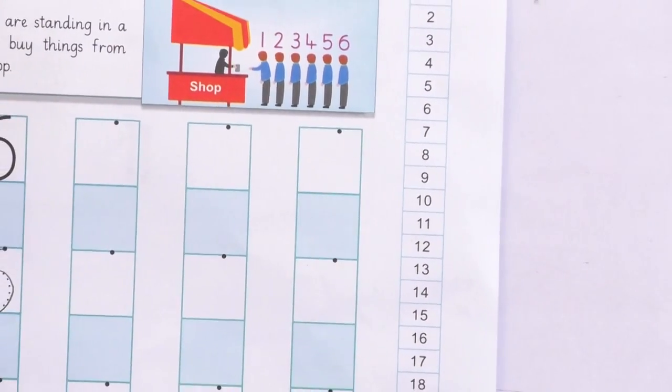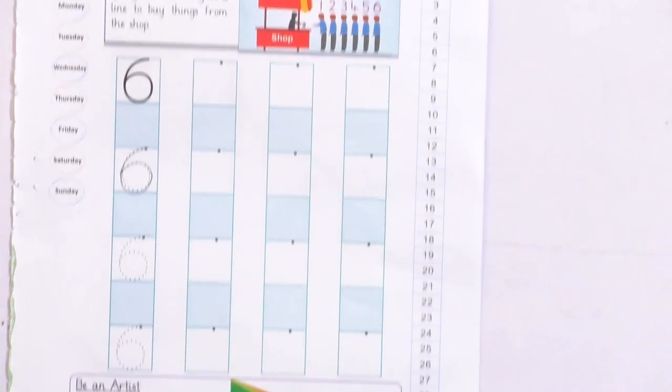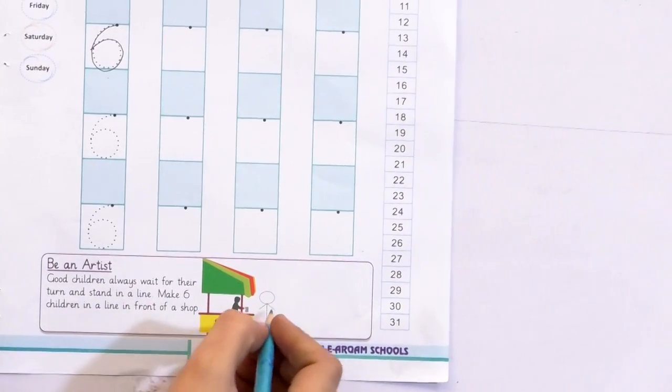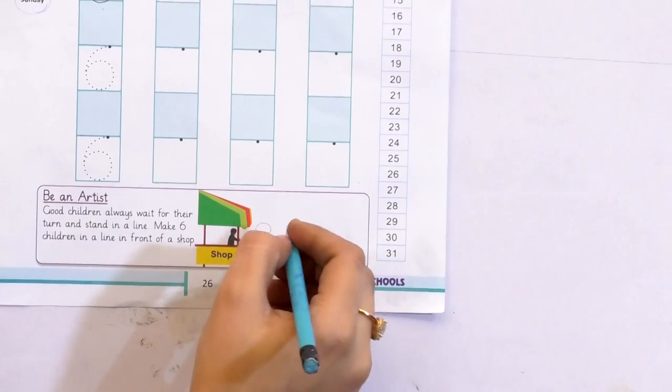Now it's activity time. Make 6 children in a line in front of the shop. There is one, and next, you have to make 6 children here.